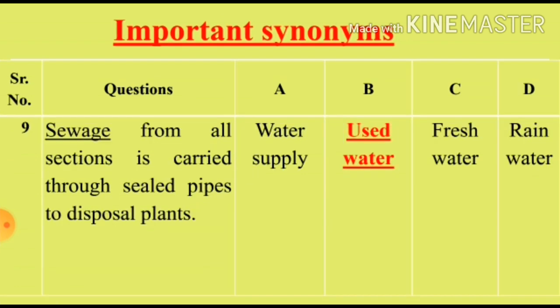Question 9: 'Sewage from all sections is carried through sealed pipes to disposal plants.' We will see the synonym for the word 'sewage'. Option A: Water supply (paani mohaiya karna). Option B: Used water (istamal shuda paani). Option C: Fresh water (taza paani). Option D: Rain water (barish ka paani). Options C and D are irrelevant. Option B, Used water, is the right synonym for the word 'sewage'.